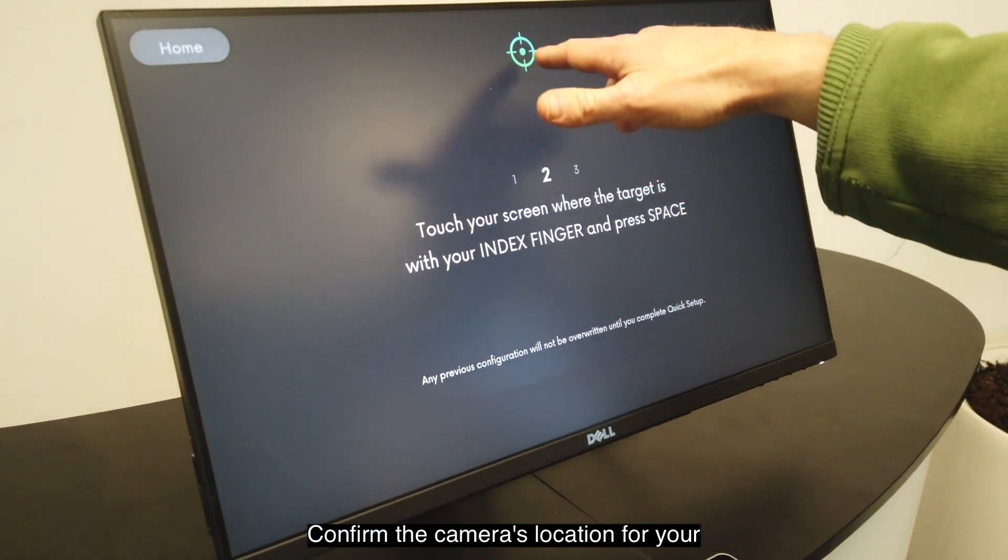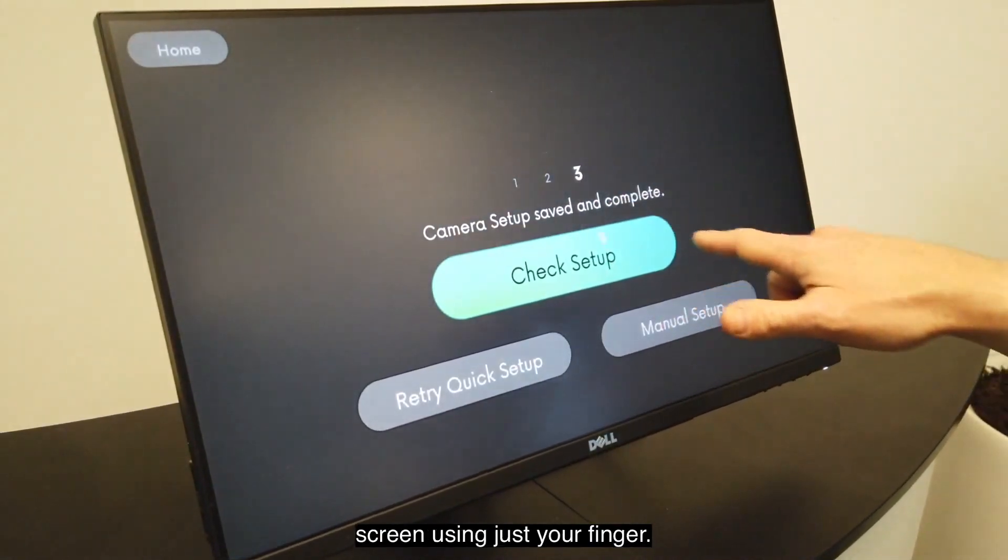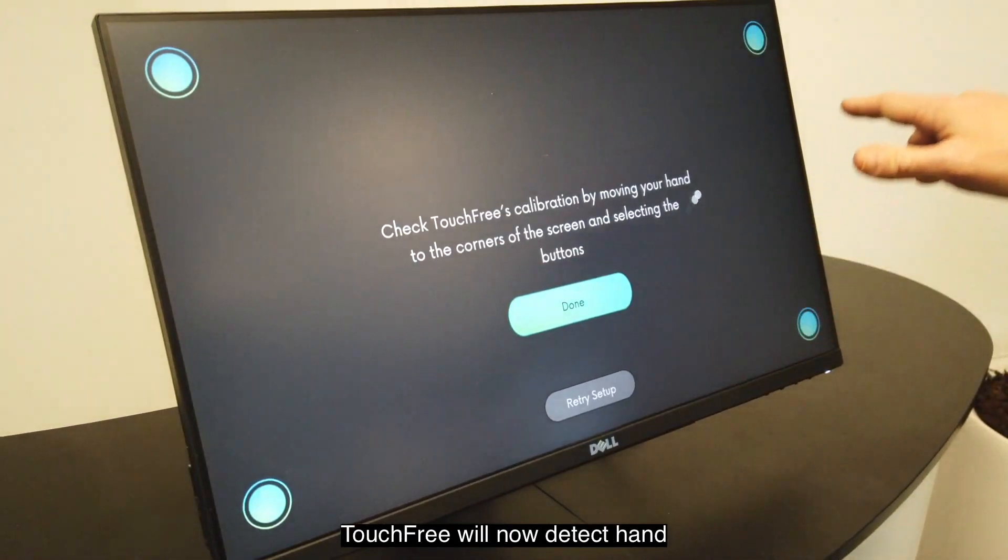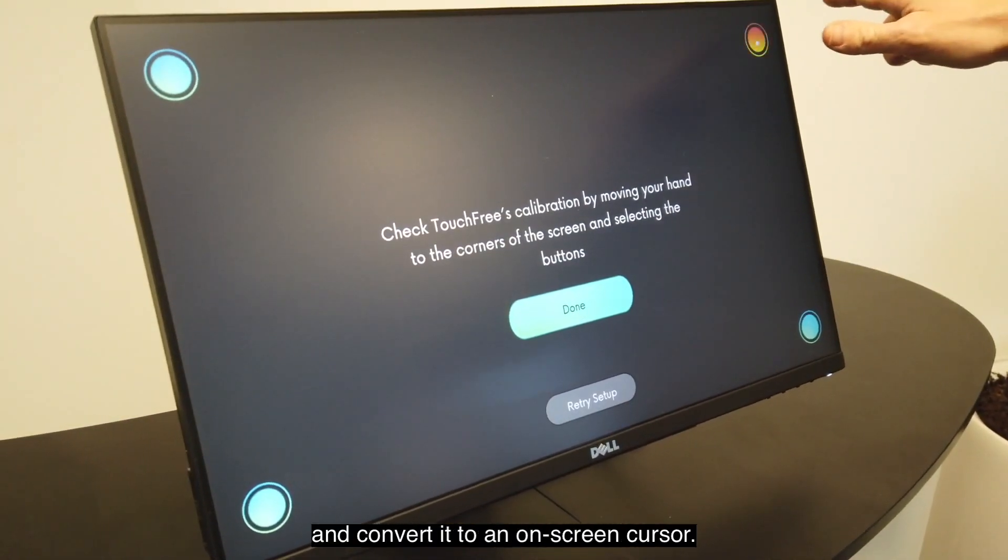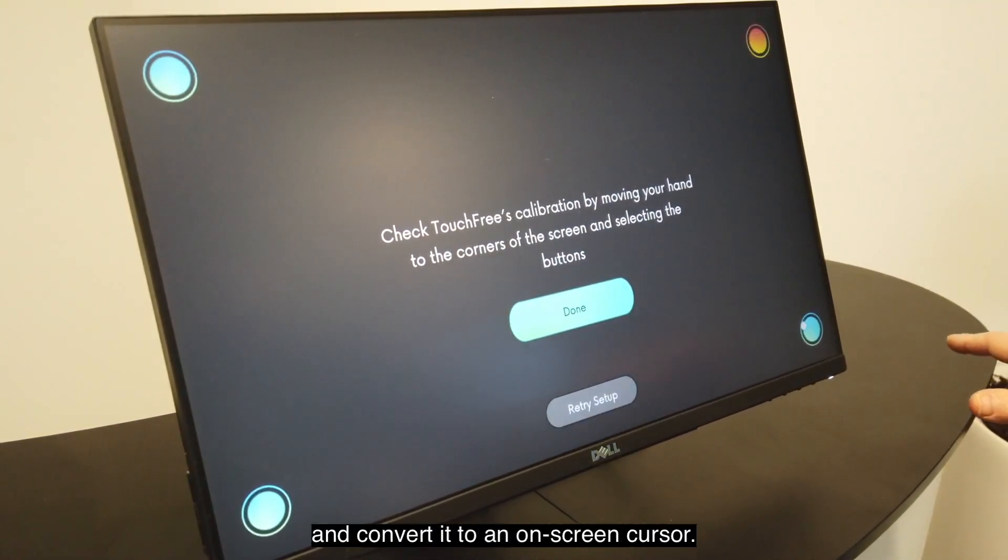Confirm the camera's location for your screen using just your finger. Touchfree will now detect hand movements in mid-air and convert it to an on-screen cursor.